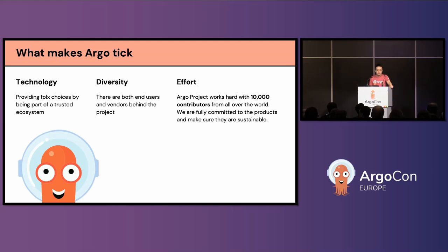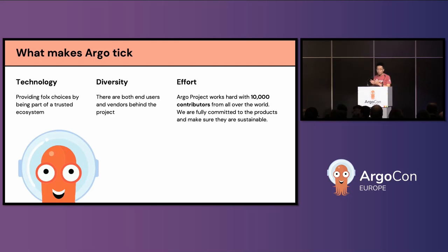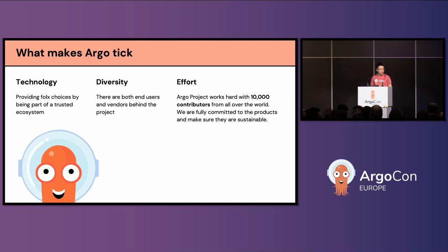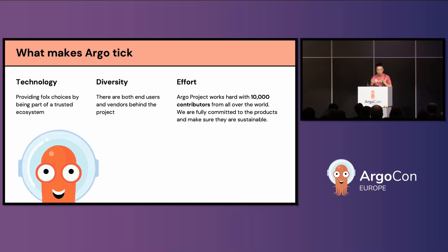I consider Argo to be reasonably successful at this stage. What makes Argo tick? I believe we have the best technology in a trusted ecosystem, and people like the lightweight, flexible, and to-the-point solution — that's what Argo does. Second, we have good diversity: 10,000 contributors from all over the world, and a community made of both end users and vendors, which is a much healthier and stronger setup. The last item is effort — we're committed to working with all contributors in the community with our limited resources, but we try our best to make the product sustainable.